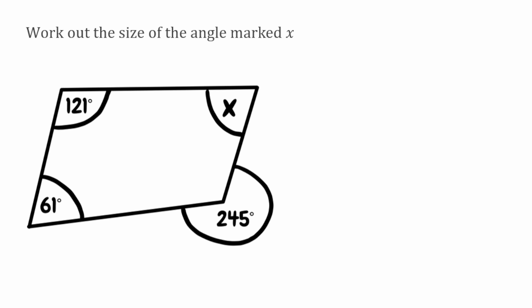For this final question again we're finding this missing angle marked x. Again in this quadrilateral we can see we've got two angles that we've been given on the interior which is 121 and 61, but then we've got this exterior angle of 245. So what we're going to do here is actually figure out this angle first, and we can use another angle fact to help us figure this out because we know this exterior angle is 245 degrees.